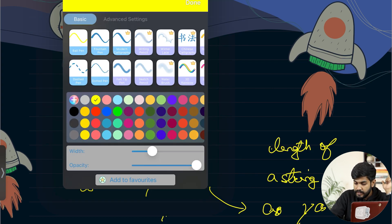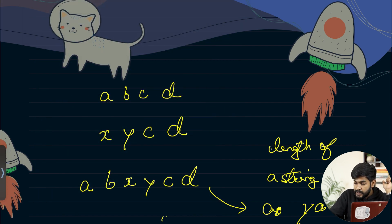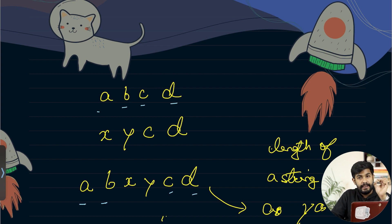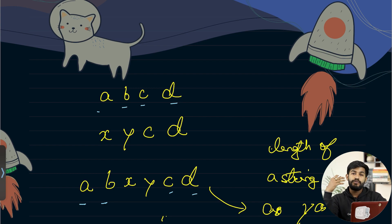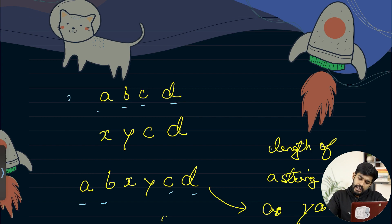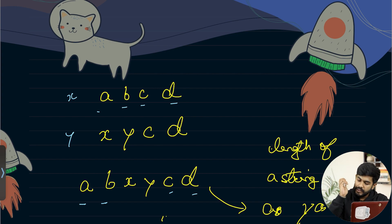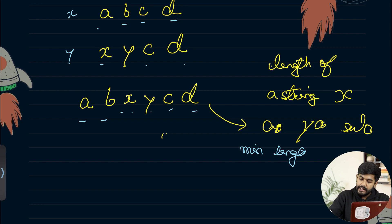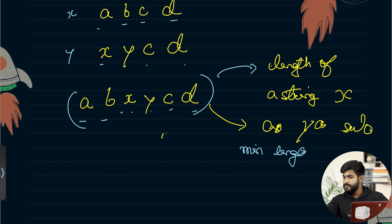Now you might not be familiar with the definition of subsequence — it means all the characters of both strings X and Y would be present in the resultant string in the same order as they appear. And this is the question — you just need to return the length. You don't really need to return the resultant string itself, you just need to return the length.